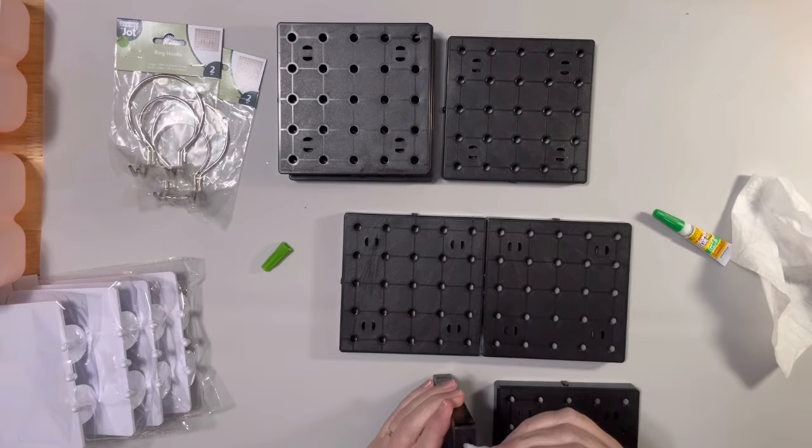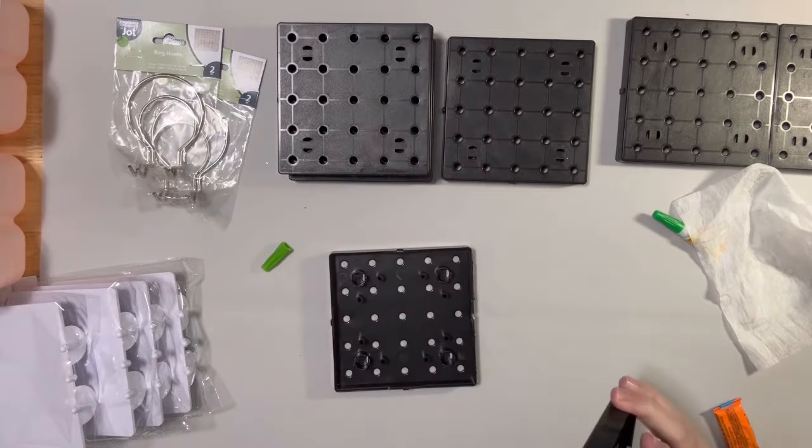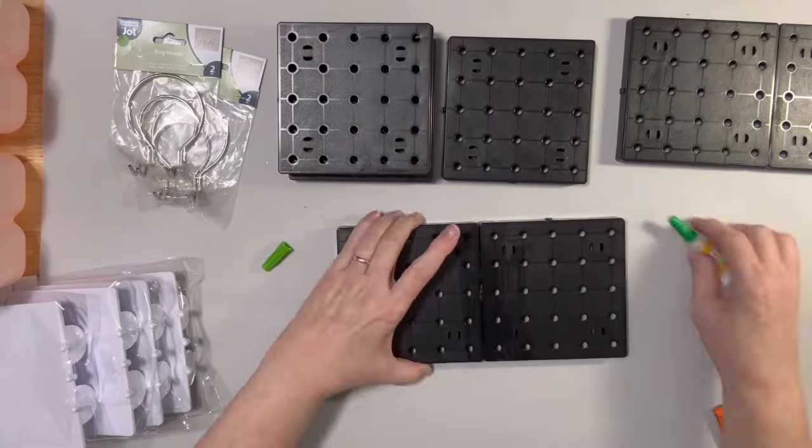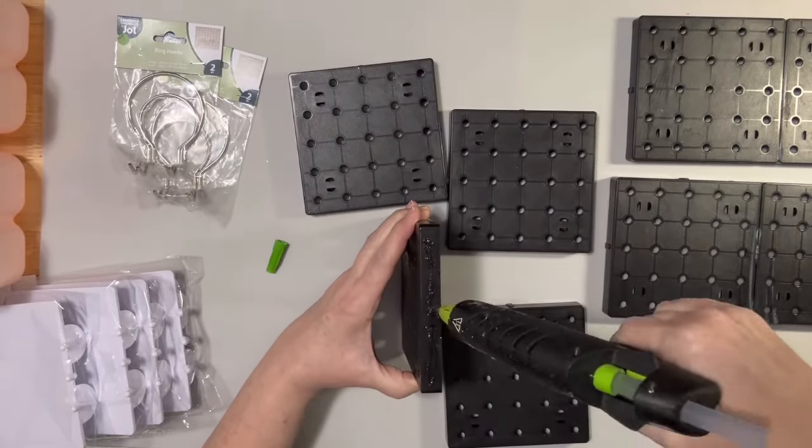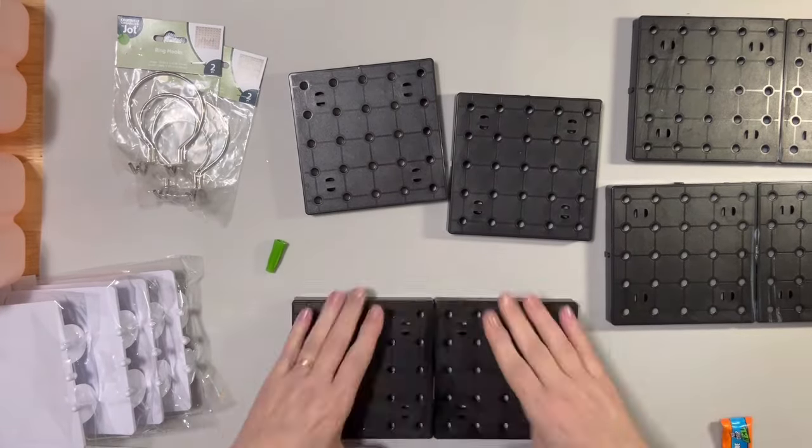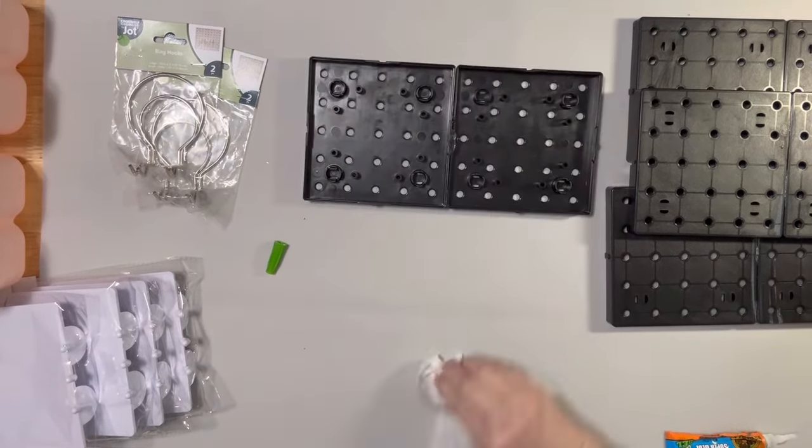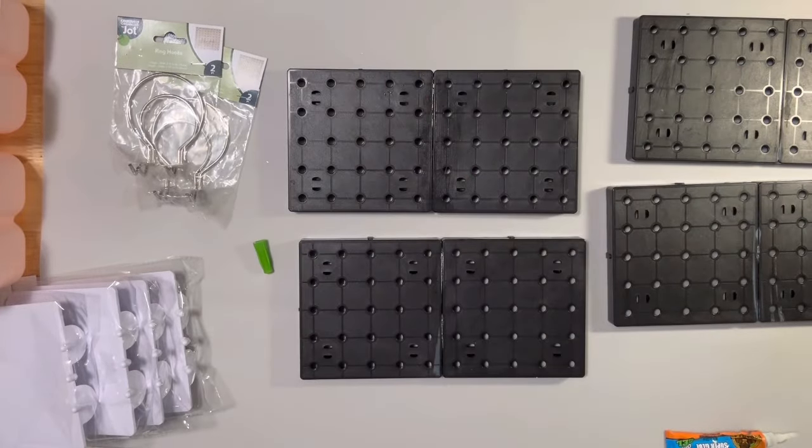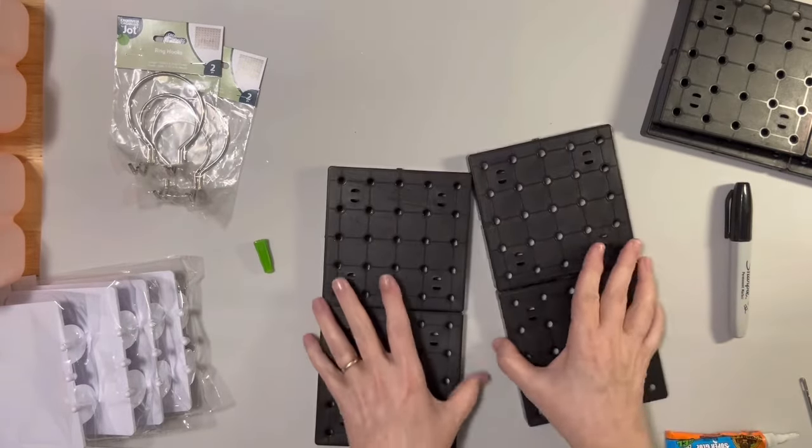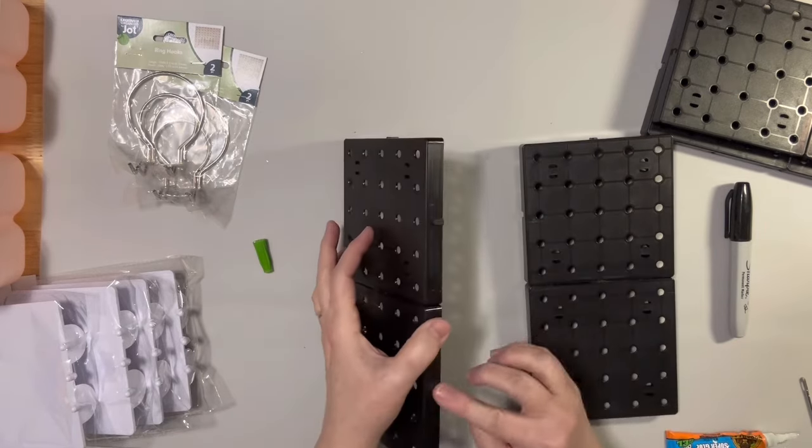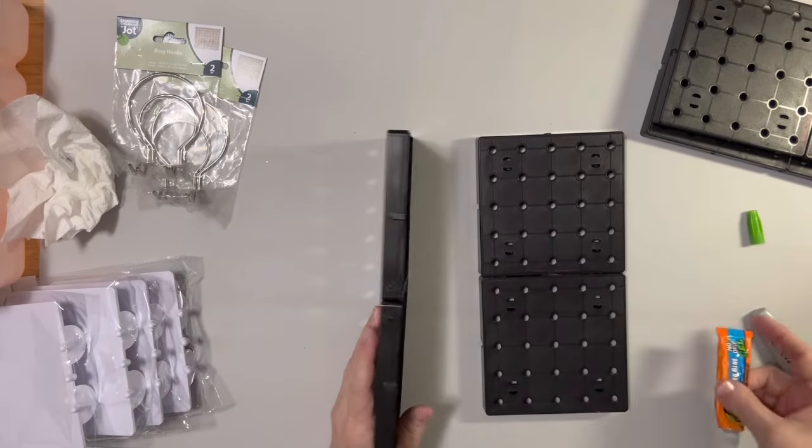And then you're going to complete this same process with the remaining black peg tiles. Now what we want to do is we want to make two panels, one for each side. So we're going to make sure that we have our indentions and our peg sides in the correct position. And we're going to do the same thing we did a while ago.